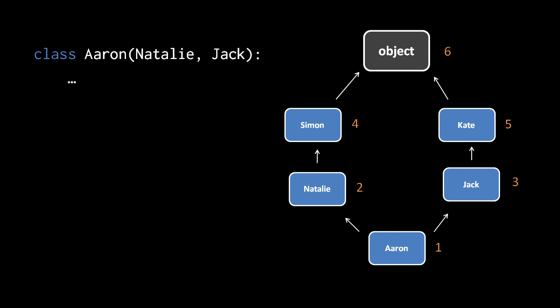The alternative to this search behavior is if Python were to do depth first rather than breadth first. In a depth first search, Python would check Natalie and all of its ancestors before it would even look at Jack and its ancestors. Actually, depth first is how Python did this search in earlier versions. In Python 3, however, it's always breadth first.